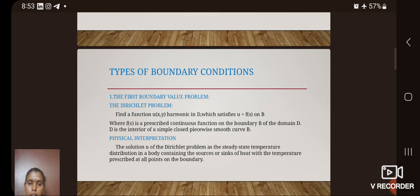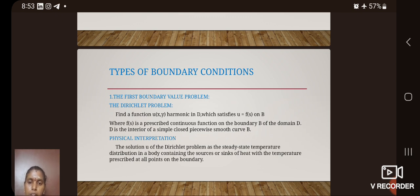Types of Boundary Value Problems. The first boundary value problem is stated as the Dirichlet problem: find a function u(x, y) harmonic in D which satisfies u = f(s) on boundary B, where f(s) is a prescribed continuous function on the boundary B of the domain D. D is the interior of a simple closed piecewise smooth curve B. The physical interpretation: the solution u of the Dirichlet problem gives the steady-state temperature distribution in a body containing no sources or sinks of heat, with the temperature prescribed at all points on the boundary.